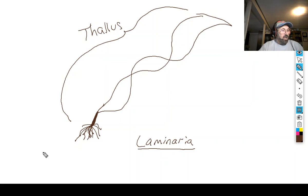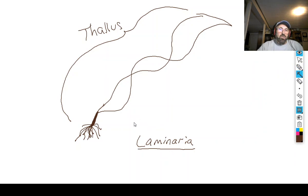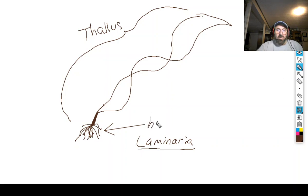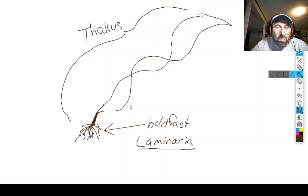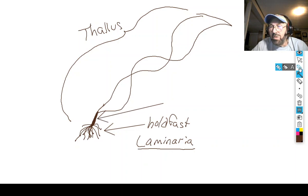The whole body is called a thallus — that should be in your notes. There are three major parts to an algae that I want you to know. The first one is called the holdfast. The holdfast does exactly that — it holds the algae fast; it anchors the algae to the rock or to the substrate. There are no tubes leading up and down throughout the algae.